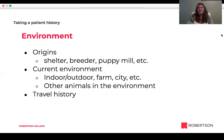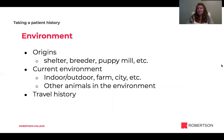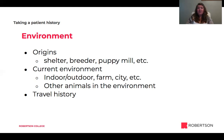The next thing we need to know about is the environment of our patient. There are three aspects: the origins of the pet — where did they come from originally? Are they a shelter animal? In that case they might've been exposed to more infectious illnesses. Did they come from a breeder? That can give us information about genetic diseases. Did the animal come from a puppy mill? That tells us about the quality of breeding.